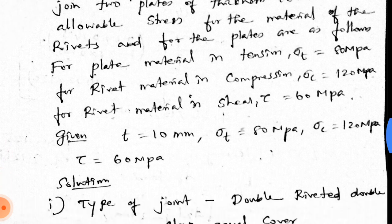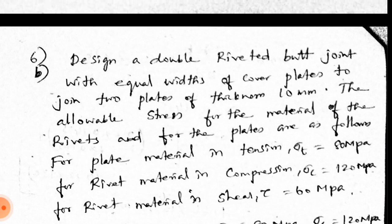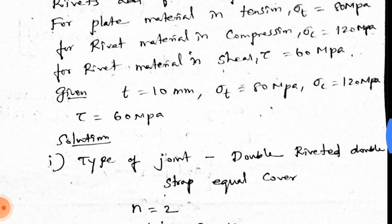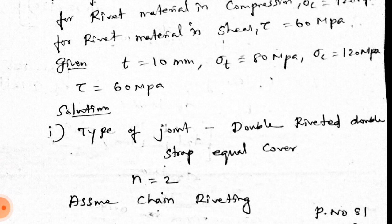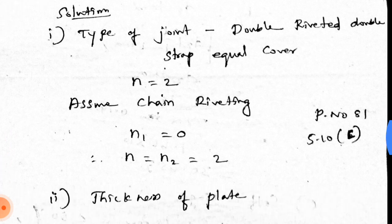First, write down the given values, then the solution. In this rivet problem, we will follow a step-by-step procedure — that is very important. The first step is to identify the type of joint. This is a double riveted double strip equal cover butt joint, with n = 2. We assume chain riveting.